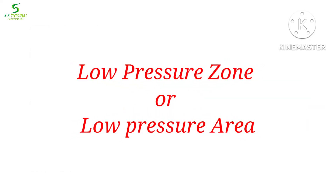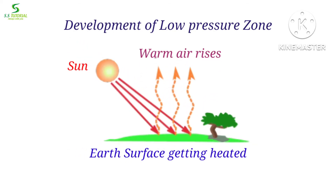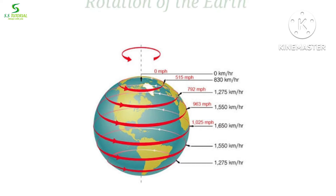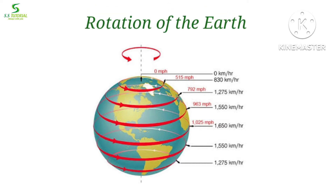Let's know what is meant by a low pressure zone. Low pressure areas are the areas where the weight of the air above the earth's surface is lower than the average. Air loses its weight when its density or amount of air gets low, which happens due to the rise of air when air gets heated by the sun and due to the rotation of the earth.